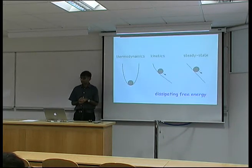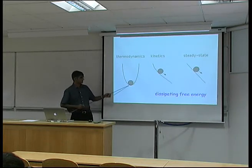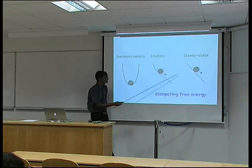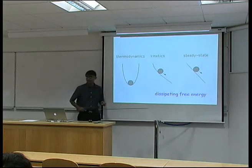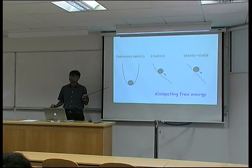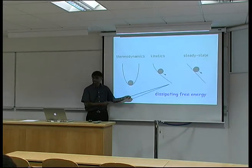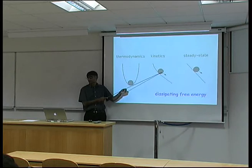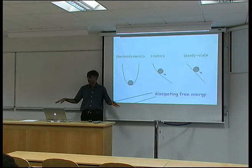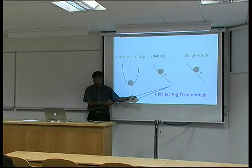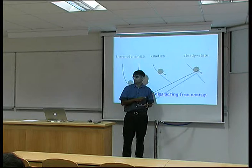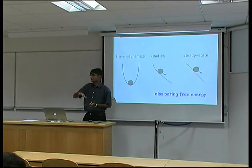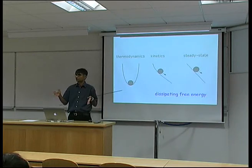There are two kinds of kinetic states. In one, if you are standing on the ball while it's falling, you would see things changing around you because the slope differs from point to point. But in steady state, even though we are dissipating free energy, an observer located on the ball doesn't see much of a difference — things around them look the same. That's called steady state.